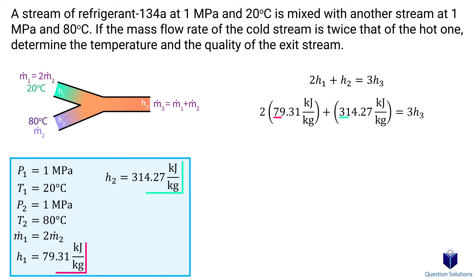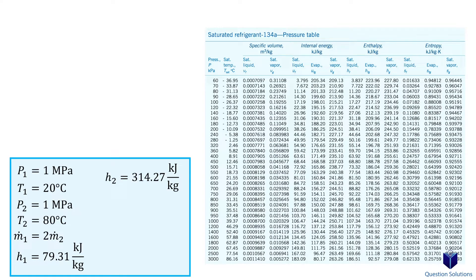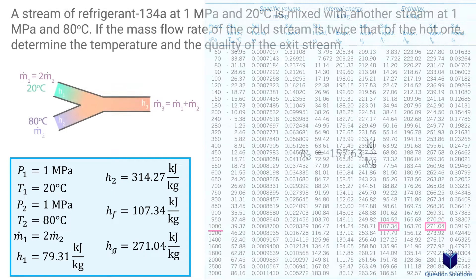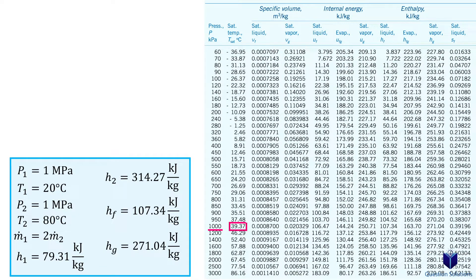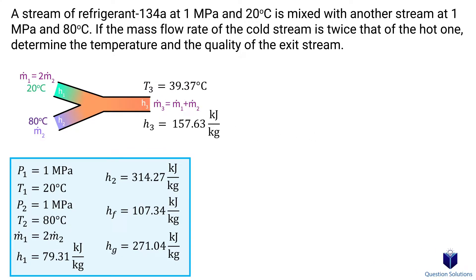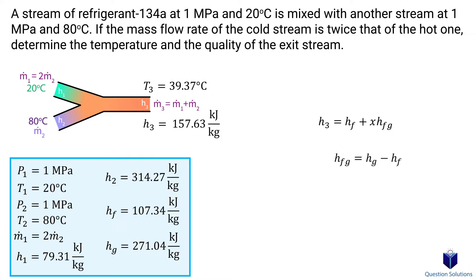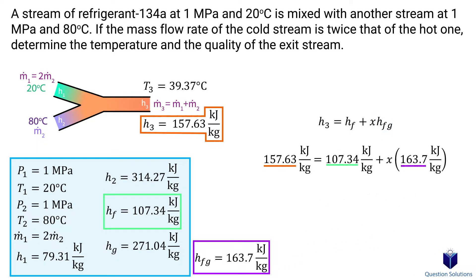With these enthalpy values, we plug in to solve for the enthalpy of the outlet. To determine temperature from outlet enthalpy, we first check the type of mixture by looking at the R134a pressure table at 1 MPa. Our outlet enthalpy is greater than the saturated liquid enthalpy but less than the saturated vapor enthalpy, so the refrigerant at the outlet is a saturated mixture. The saturation temperature at 1 MPa gives us our outlet temperature. For quality — the ratio of vapor to liquid — we use the quality equation with the saturated liquid and saturated vapor enthalpy values at 1 MPa.